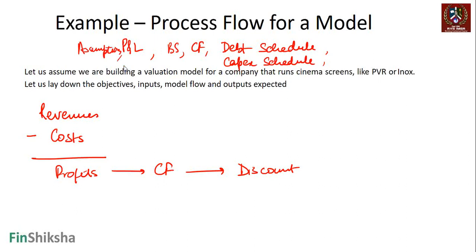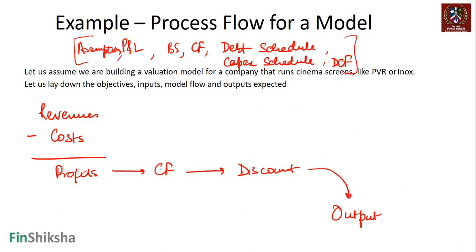You can create sheets around all this, and of course there is a sheet around the assumptions. It's always good to put one sheet for all kinds of assumptions. You've created all these sheets and then you can have a DCF sheet at the end, which basically does the calculations on discounted cash flows. That's your output. That's your process flow. Once you discount the cash flow, you will get your output, and these are the number of sheets that you will have to create in general while building any model.